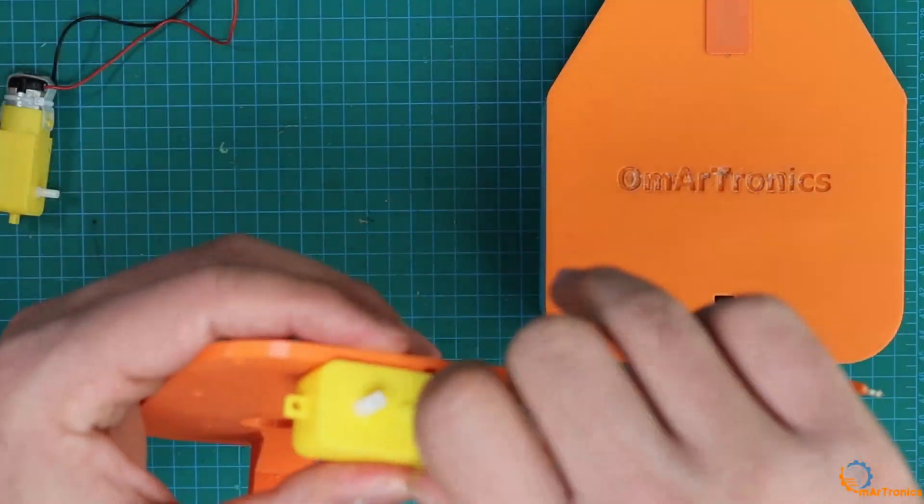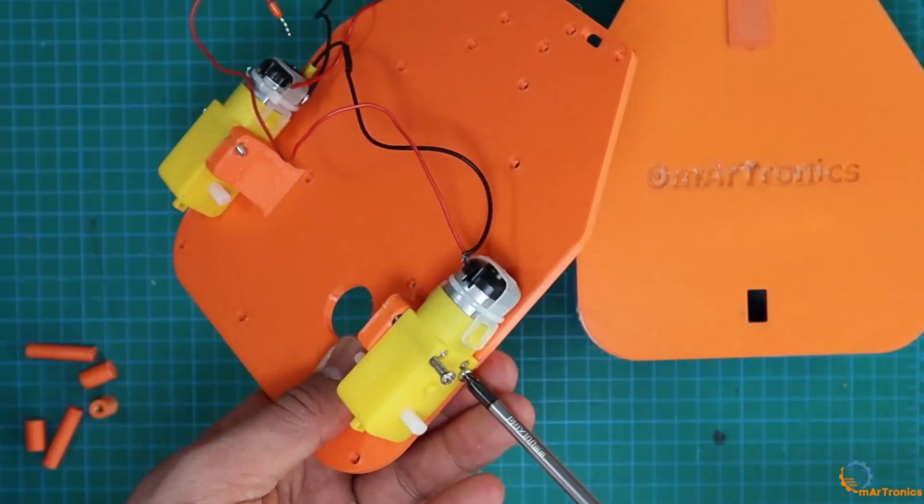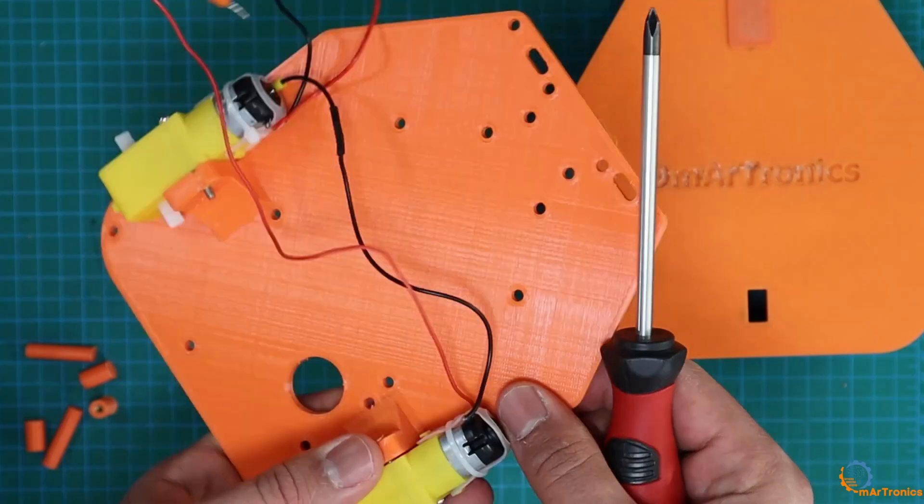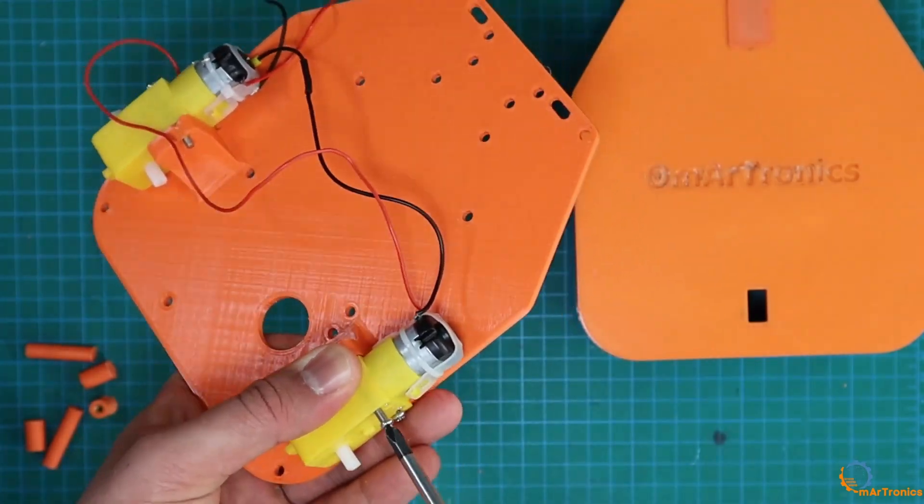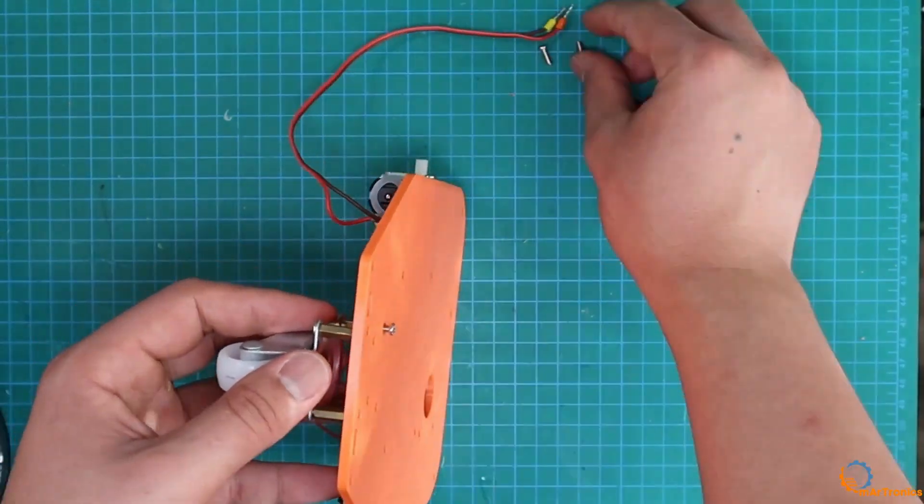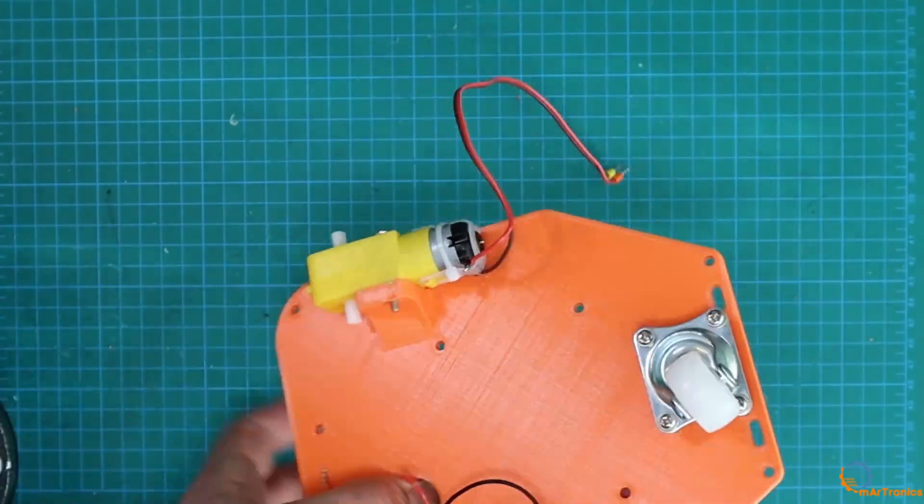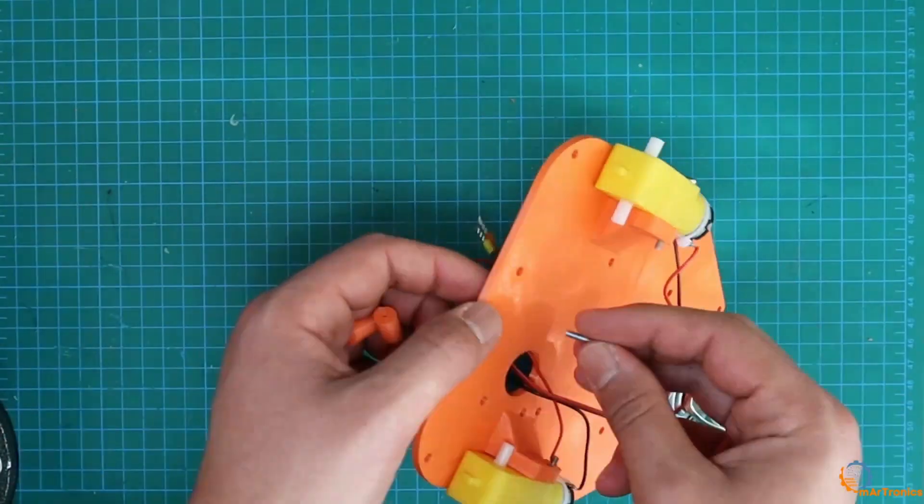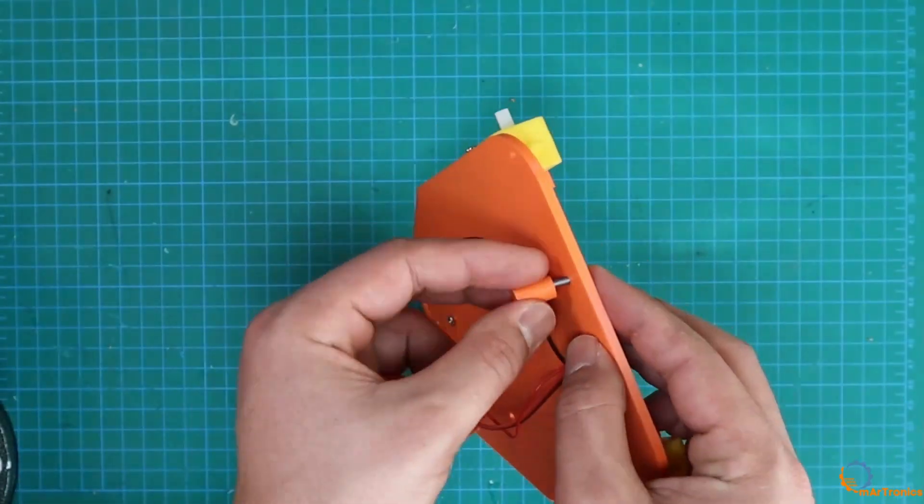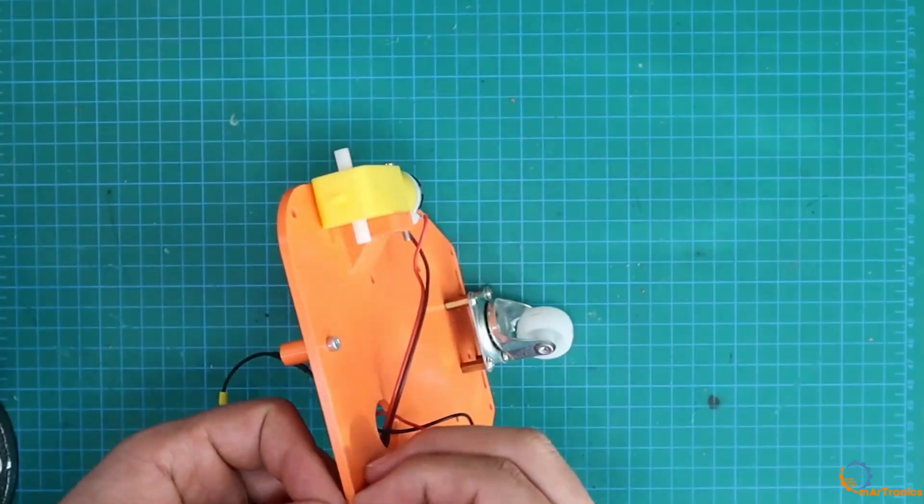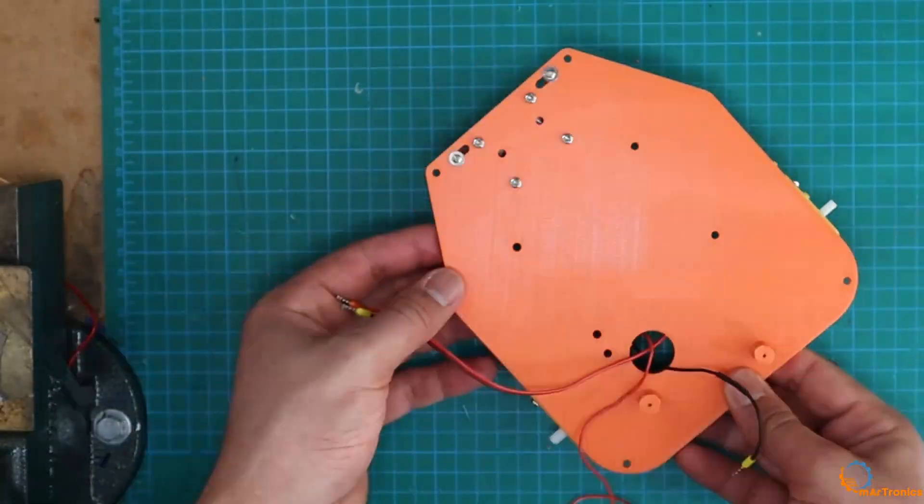Then, I began mounting the motors by directly adding screws. I installed both motors onto the base. After that, I added the supporting wheel. Then, I passed the electrical wires for the motors, and I added these spacers to mount the Arduino board on them.